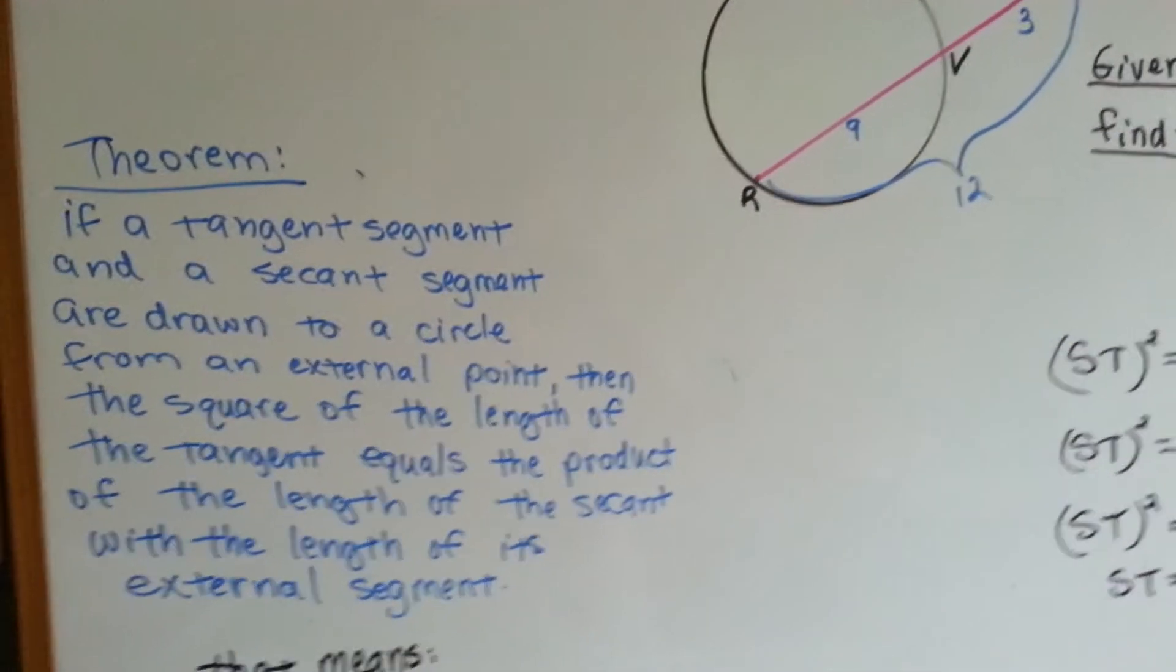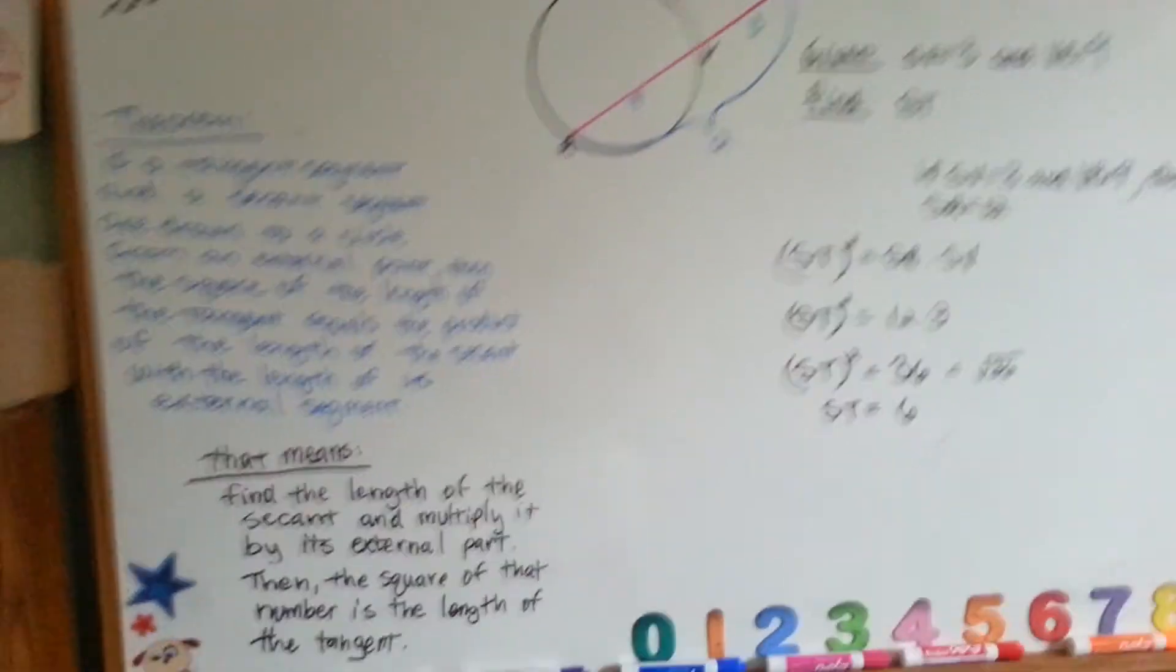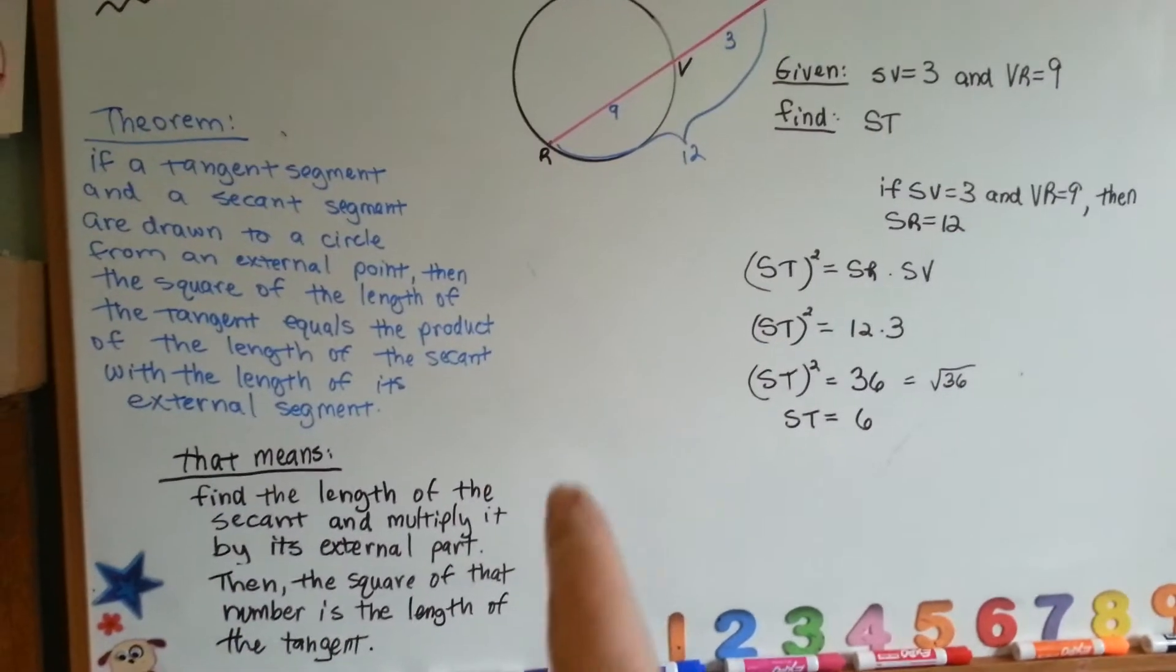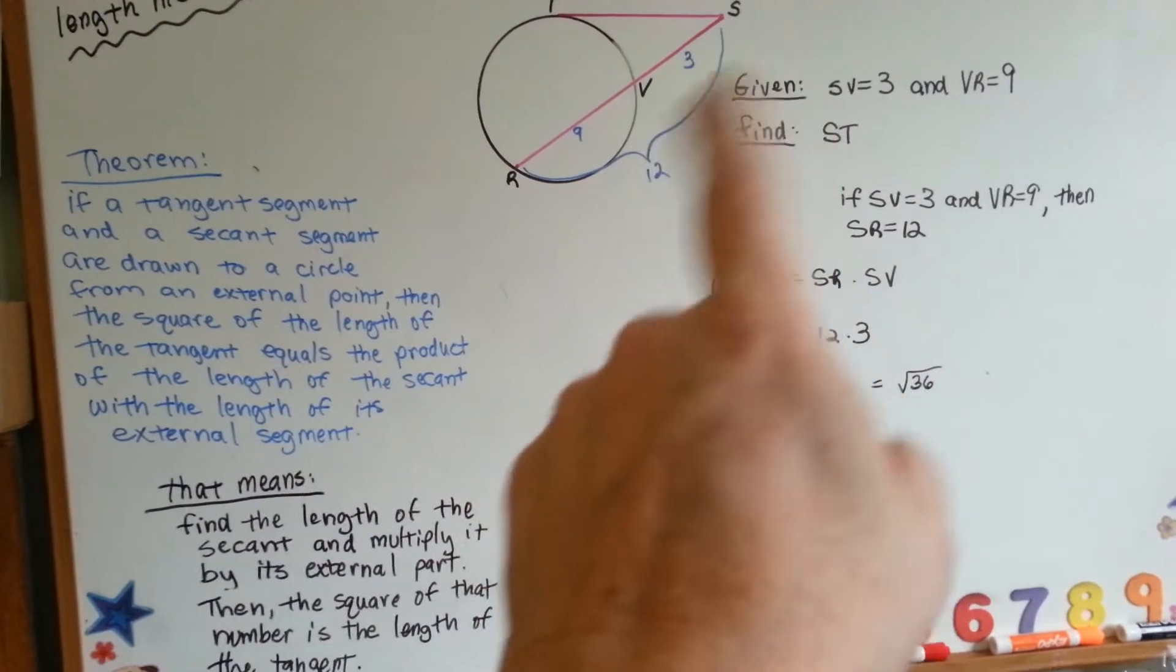What the heck does that mean? This is what it means. With the tangent segment and the secant segment, you're going to find the length of the secant and multiply it by its external part.